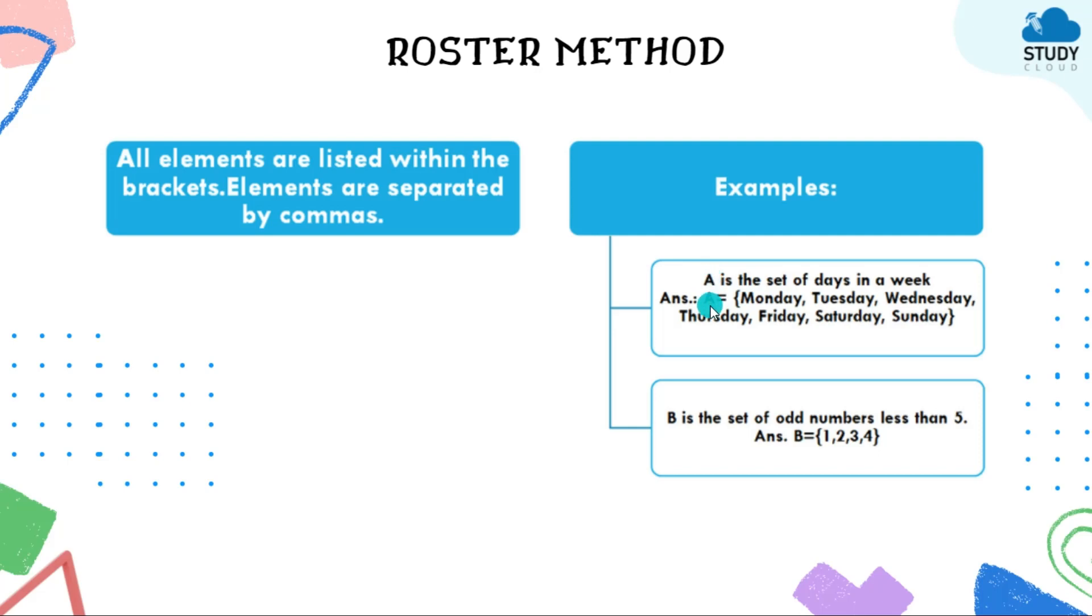Here is one example: if A is a set of days in a week, then when it comes to roster method, you have to write all the days in a week. A equals, then open the curly bracket, write first Monday comma Tuesday, then Wednesday, Thursday, Friday, Saturday, Sunday, and close the bracket.